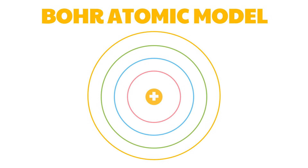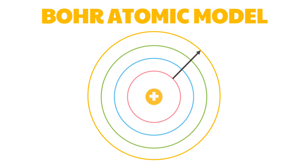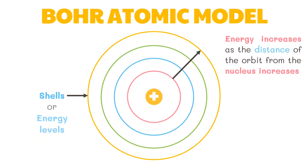Electrons in each orbit have a definite energy. This energy increases as the distance of the orbit from the nucleus increases. These orbits are also known as shells or energy levels and are each assigned a number — n equals 1, n equals 2, n equals 3, n equals 4, etc. — or letters k, l, m, n, etc.